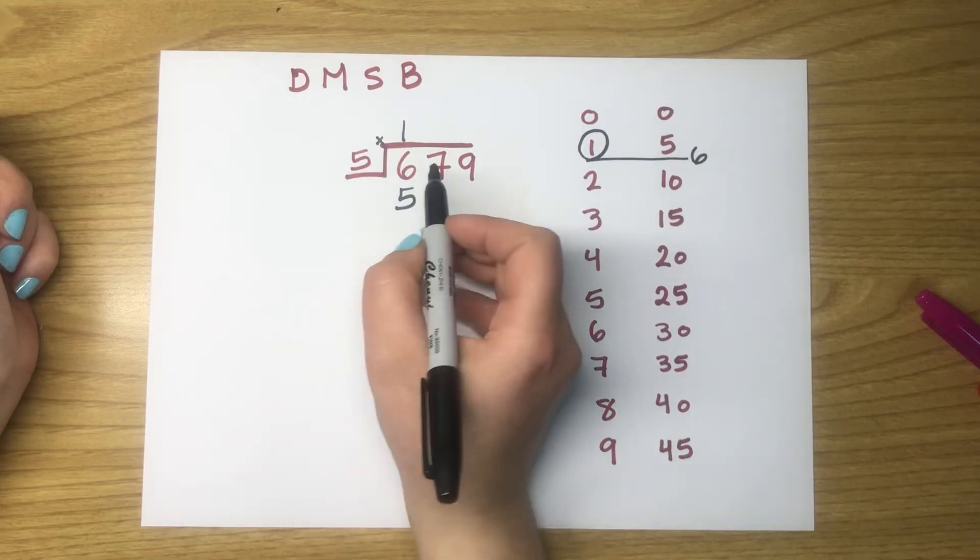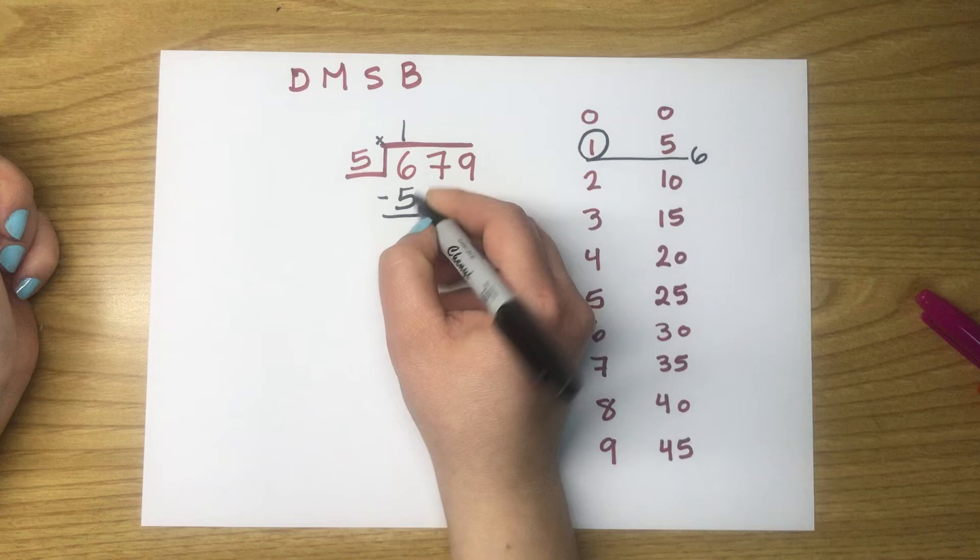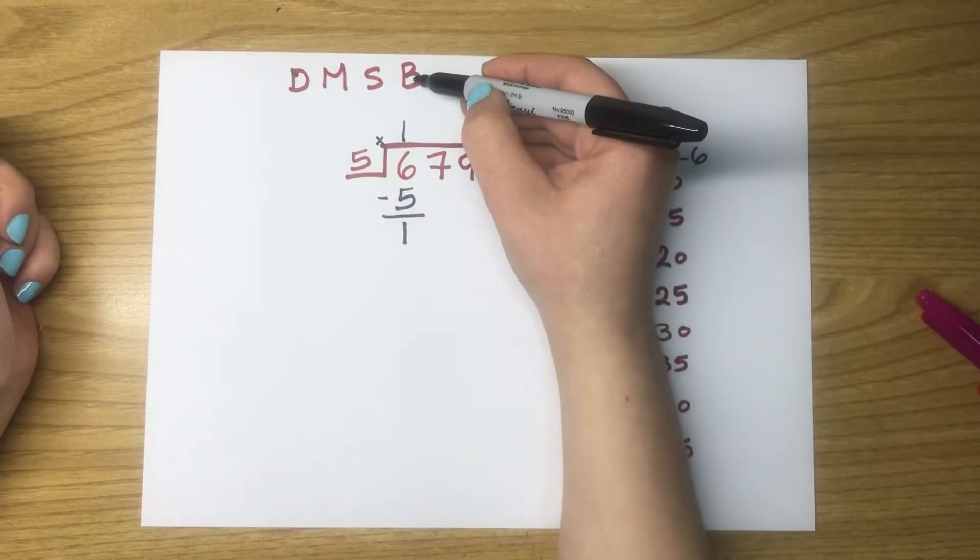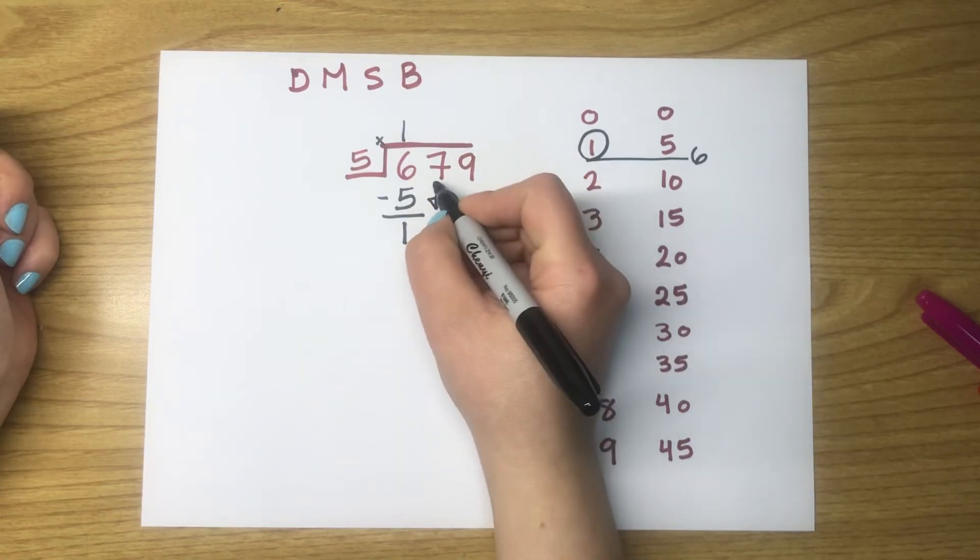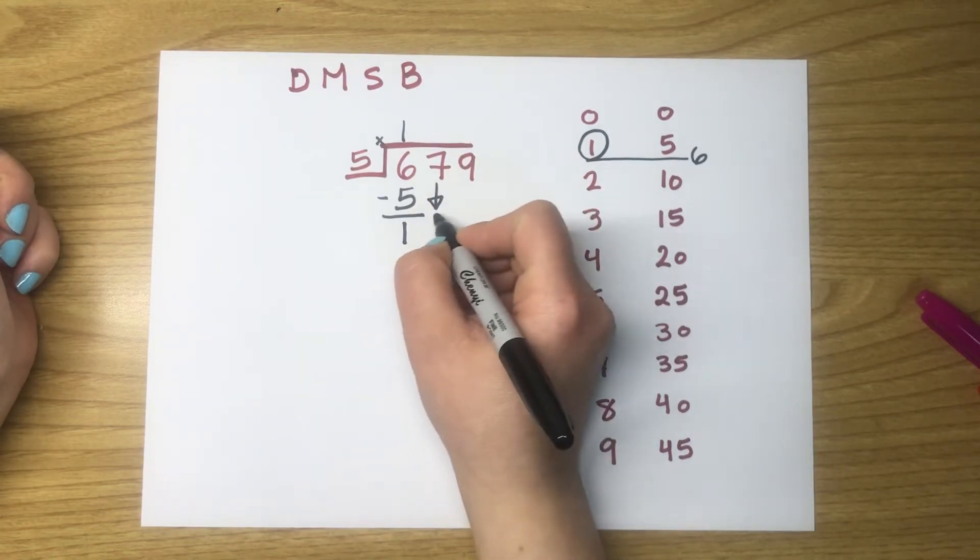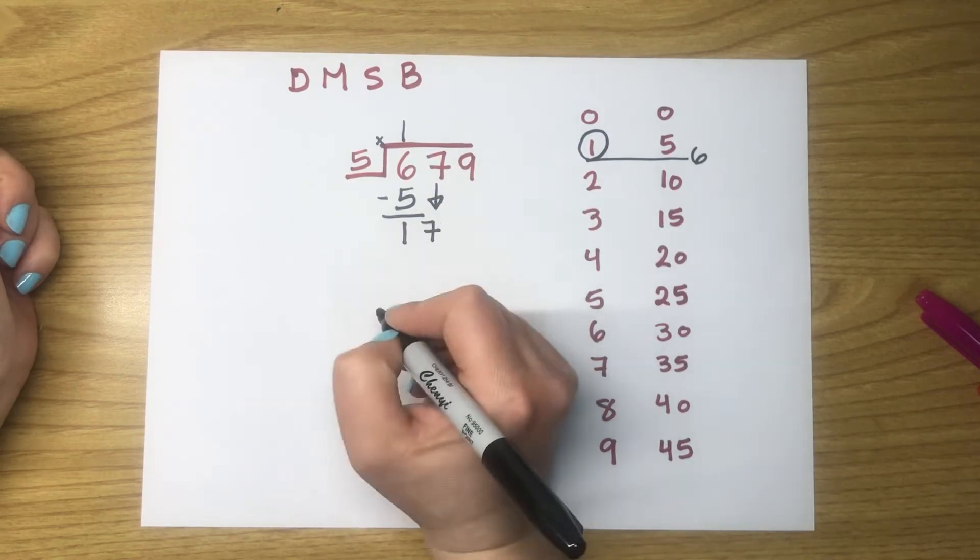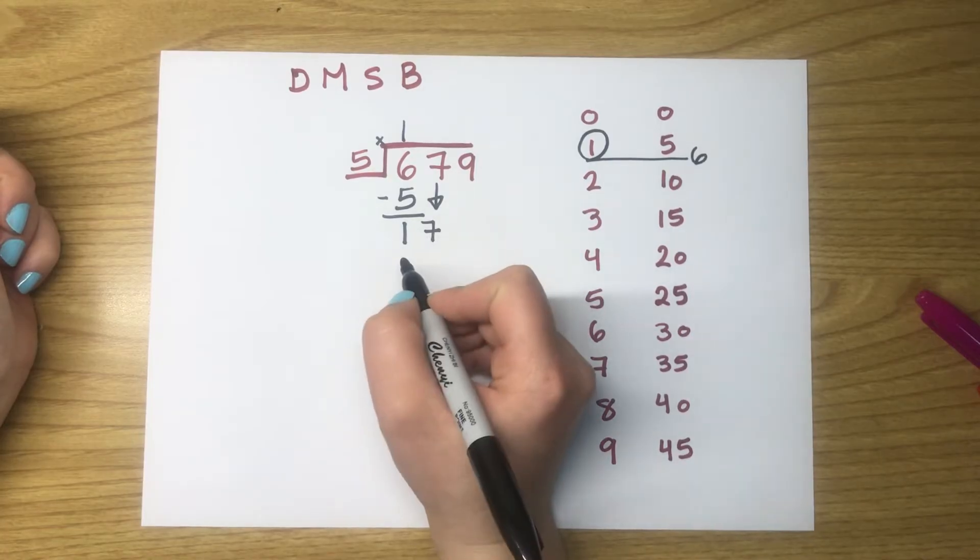After that, we start with subtracting. Subtracting 5 from 6. The answer is 1. The next step is to bring down the next digit that is in the tens. Let the arrow reach the subtraction line and put the 7 beside the 1. Now, we have a new number to divide again, which is 17.